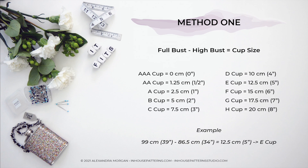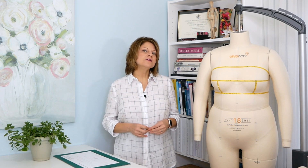If your result lands somewhere between the measurements given, simply round to the nearest number and choose that cup size. This method works well for many people, which is why it's become so popular. However, if your back body is more rounded or more muscular than average, you may find that this method doesn't work very well for you. In that case, try method number two.